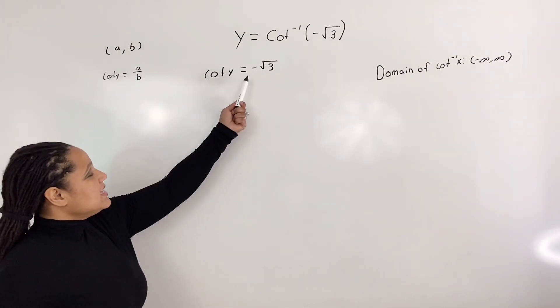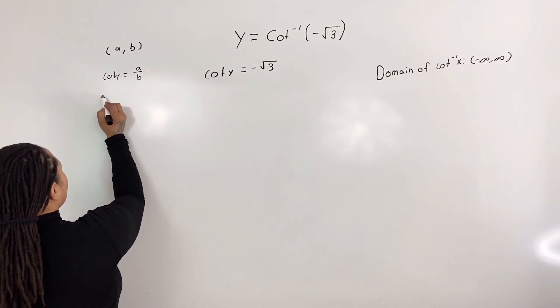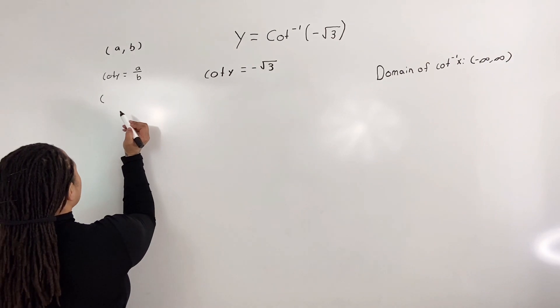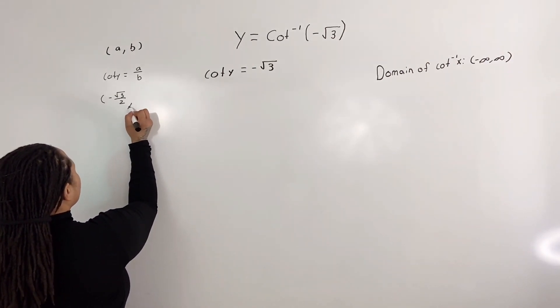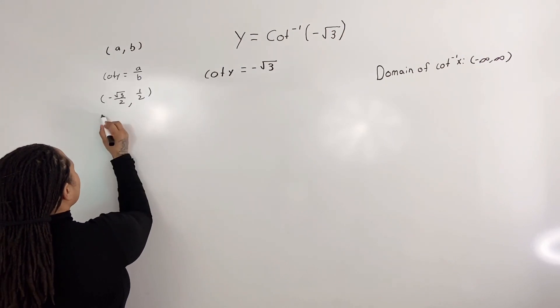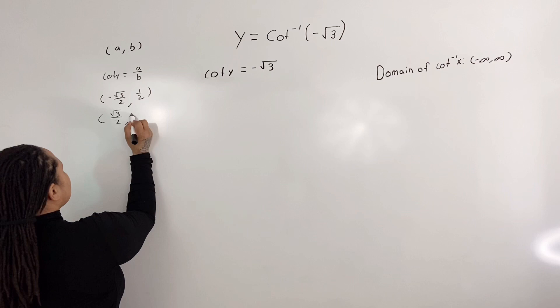And notice that we have a negative sign. So this only occurs when we have negative root 3 over 2, 1 half, or positive root 3 over 2, negative 1 half.